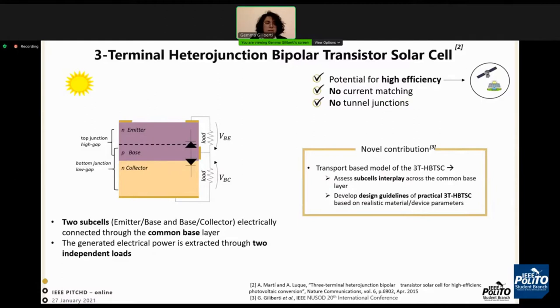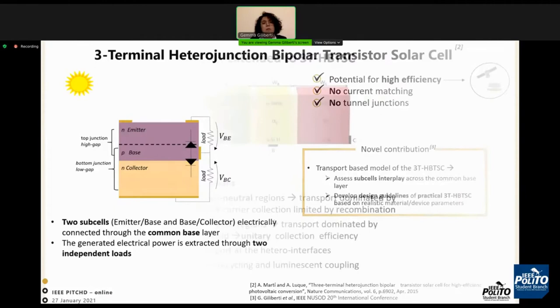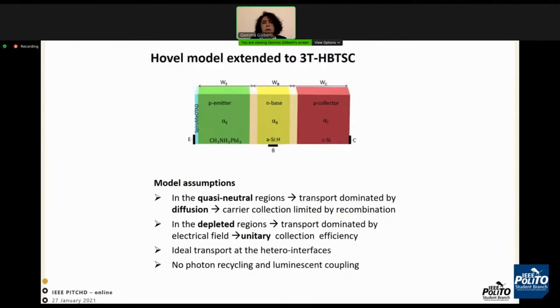Since it is based on a bipolar transistor, we can detect the two subcells: the emitter-base subcell and the base-collector subcell. These two subcells are electrically connected to a common base layer. Also, the generated electrical power is extracted through two independent loads. However, it is necessary to develop a model to assess the interplay role of the base and to develop design guidelines.